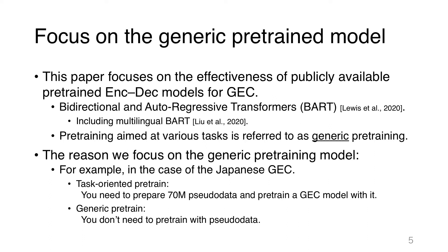Why did we focus on the generic pre-trained model? For example, if we want to build a GEC model for a certain language such as Japanese, we would need to prepare perhaps 70 million pseudo-parallel sentence pairs and pre-train an encoder-decoder model using them — which is very hard. If the generic pre-trained model is effective for the GEC task, you don't need task-oriented pre-training; you only need fine-tuning. So we investigate the effectiveness of generic pre-trained models for GEC across several languages.